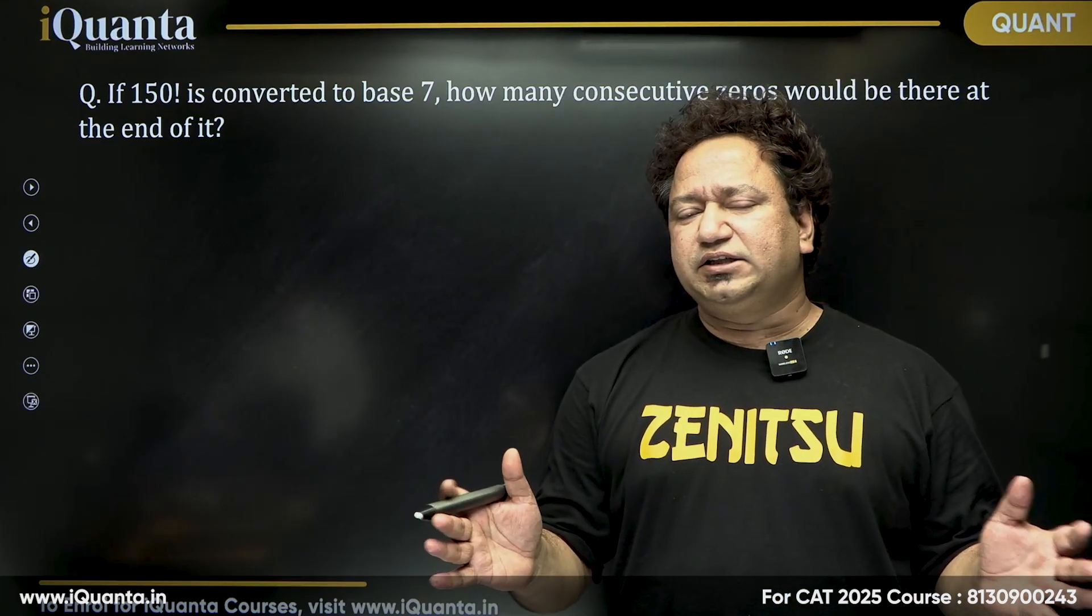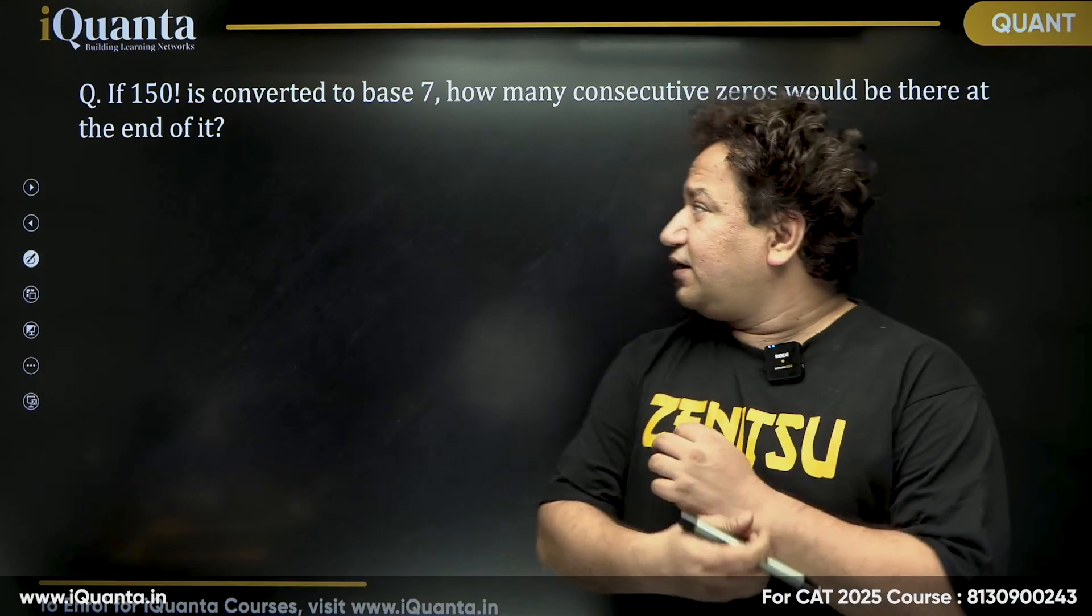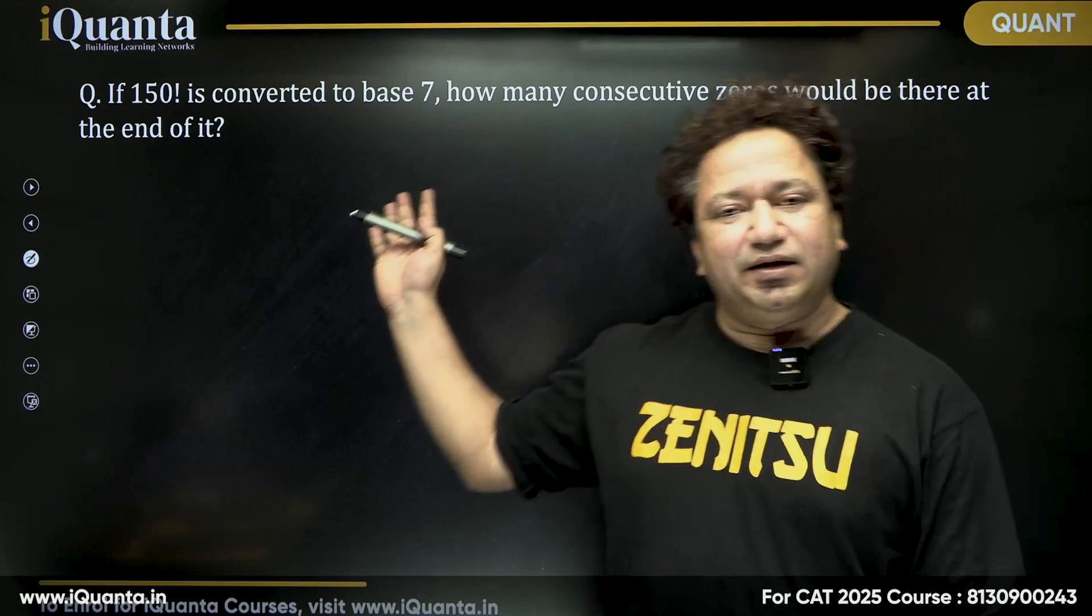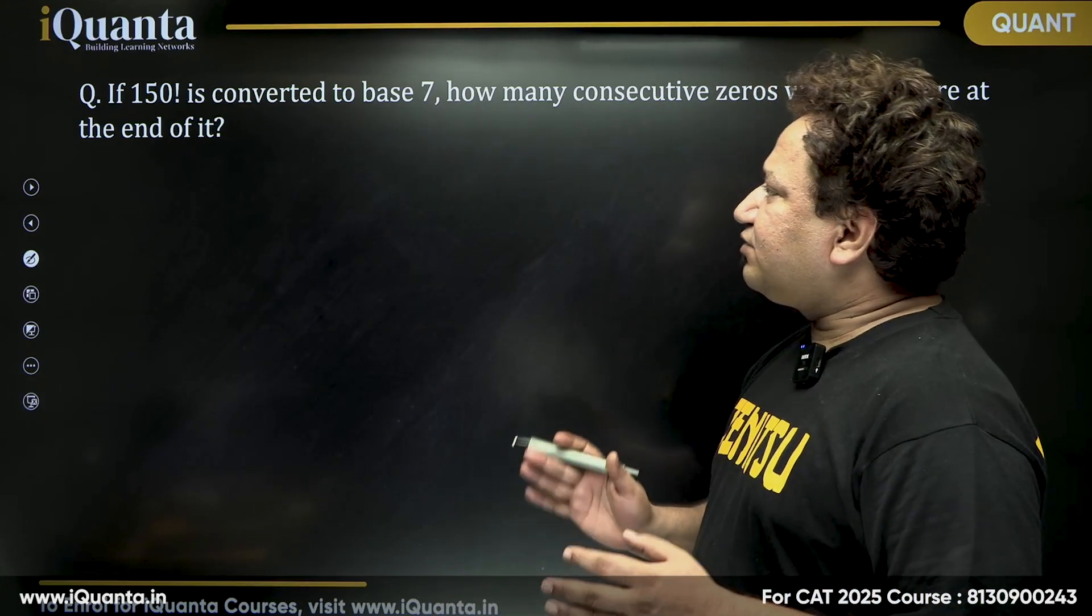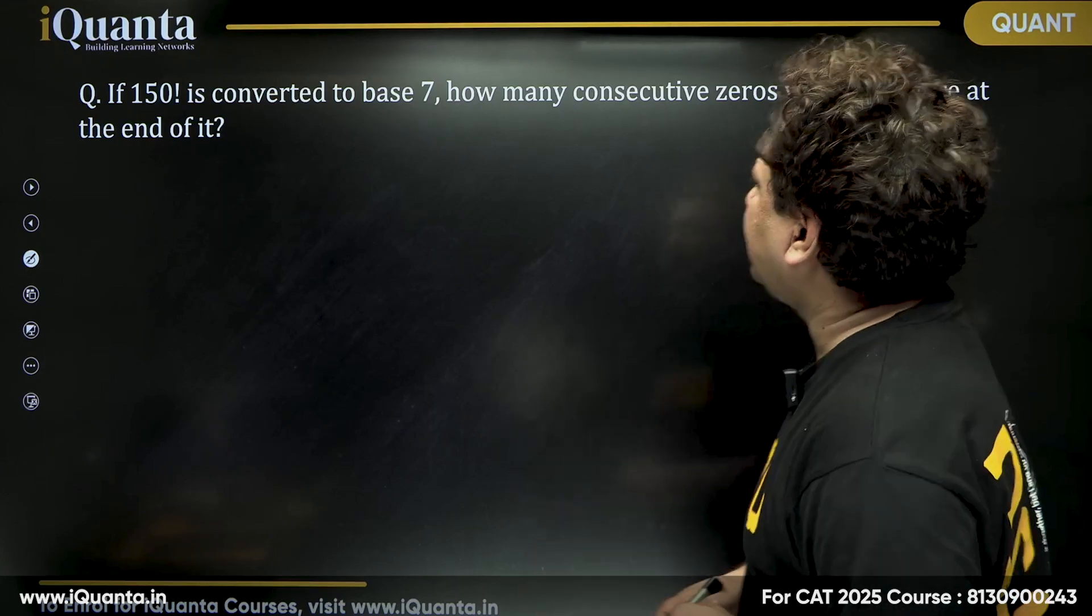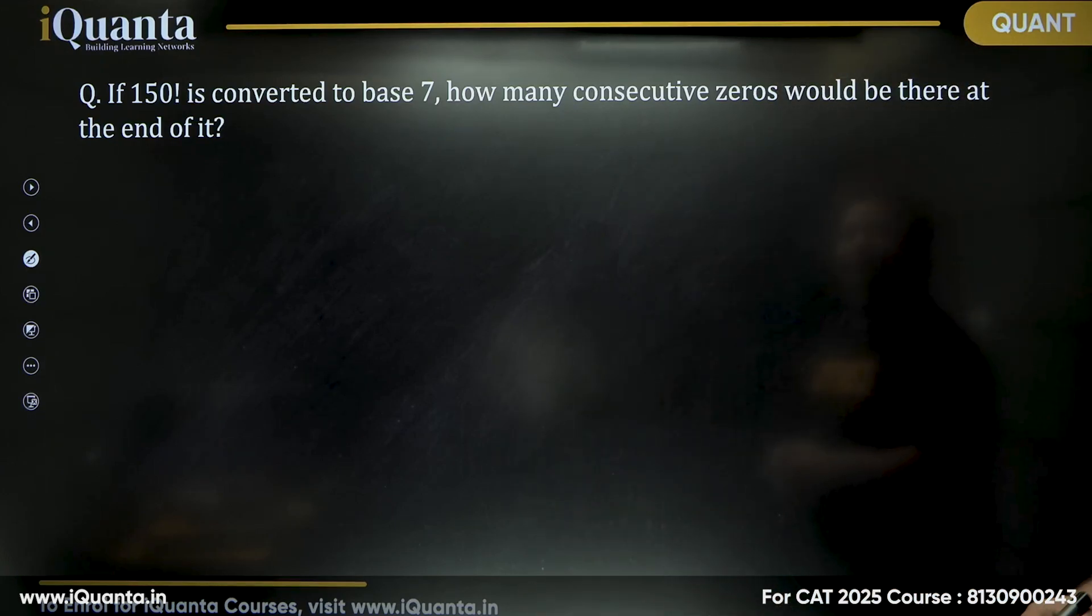This question is very much similar to the questions in which we ask trailing zeros. The only difference is here the base is 7 and normally base is 10 in decimal number system. It says factorial 150 is converted to base 7, how many consecutive zeros would be there at the end of it.